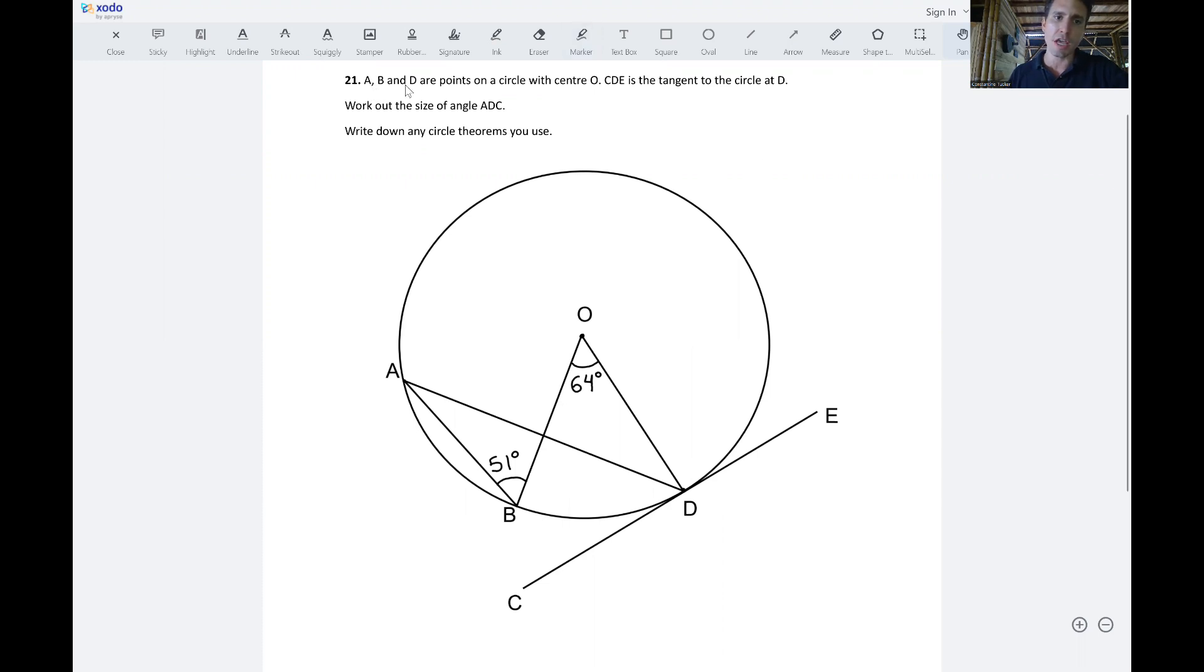They're saying we've got points A, B, D which are points on the circle and we've got centre O. CD, so this line down here, is the tangent to the circle at D.